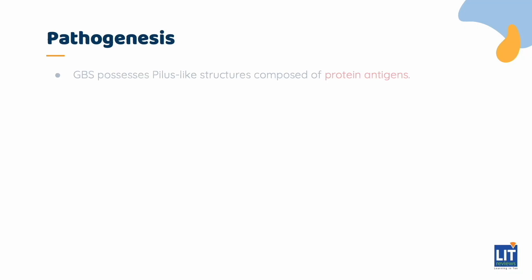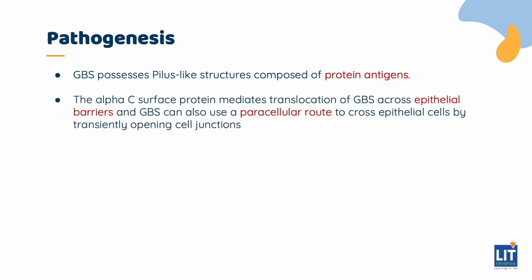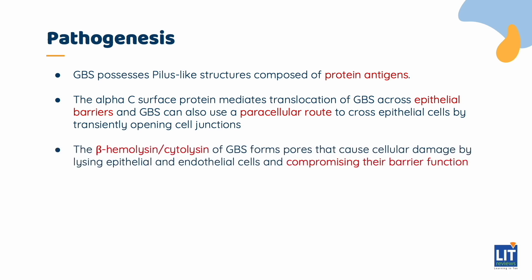Group B Streptococci have pilus-like structures composed of protein antigens. The alpha C surface protein mediates translocation of GBS across epithelial barriers, and GBS can also use a paracellular route to cross epithelial cells by transiently opening cell junctions. The beta hemolysin of GBS forms pores that cause cellular damage by lysing epithelial and endothelial cells and compromising their barrier function.